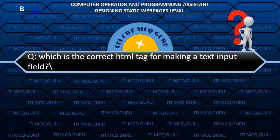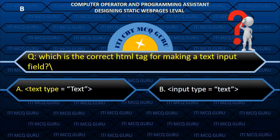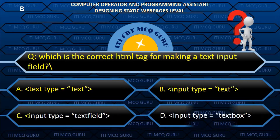Which is the correct HTML tag for making a text input field? B. input type equals text.